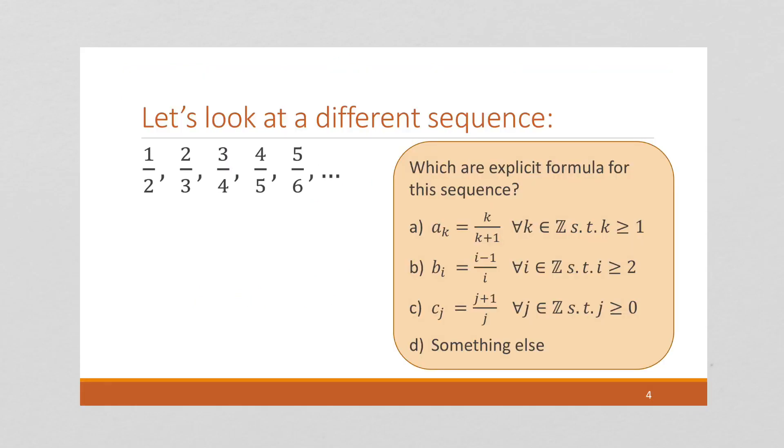Let's look at a different sequence. Here's a sequence. We have 1 half, 2 thirds, 3 fourths, 4 fifths, 5 sixths, and so on. And the question is, what is an explicit formula for this sequence? Well, explicit formulas are nice because they have a single formula with a starting point that describes all the numbers in the sequence.